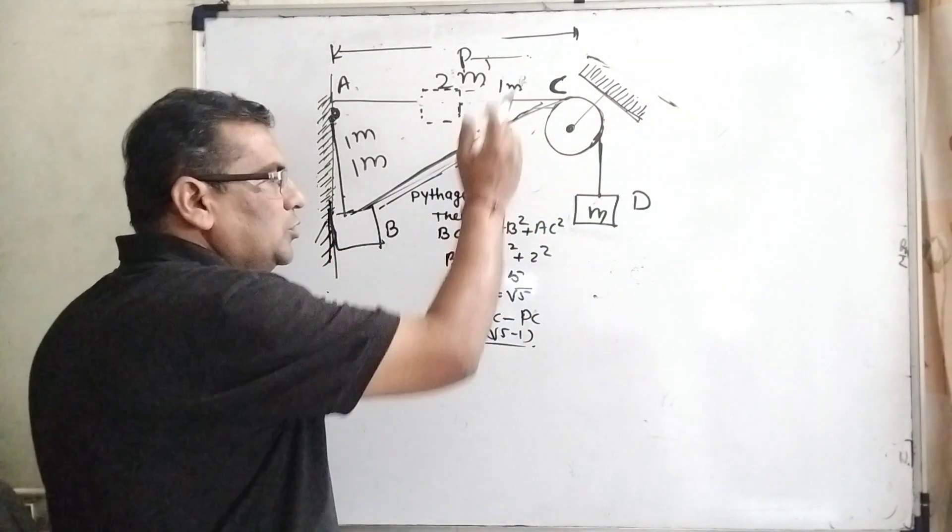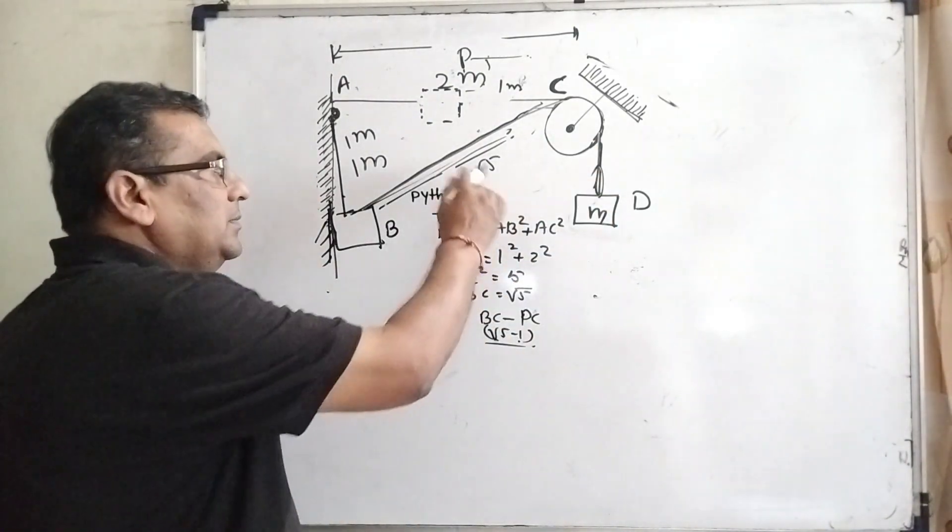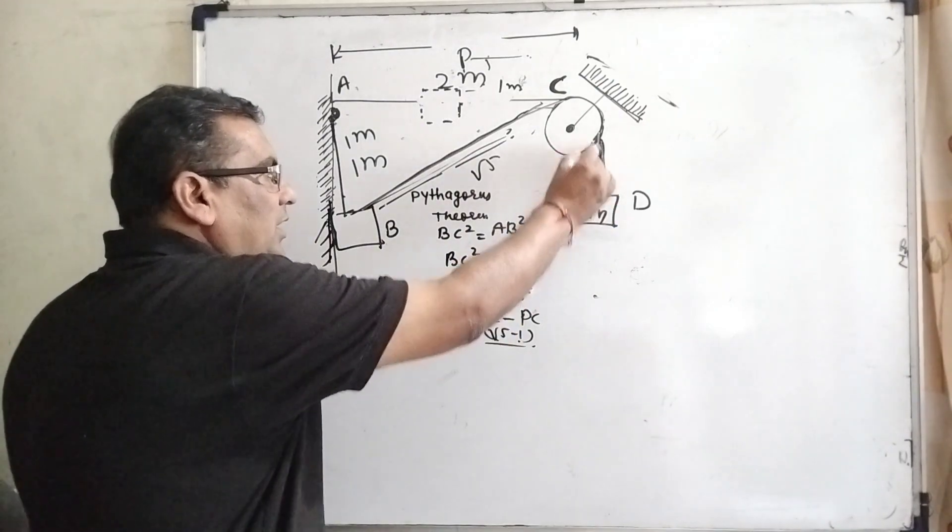Now this block goes upside, that means the height is root 5 minus 1, because we have to get this height.